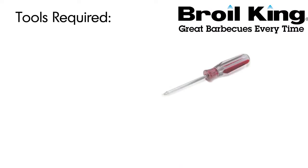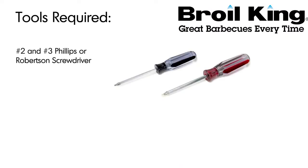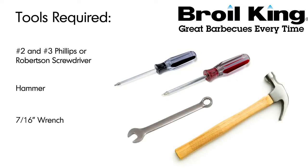You will need the following tools to assemble your Brawlking barbecue: a number 2 and a number 3 Phillips or Robertson screwdriver, a hammer, and a 7/16ths combination wrench.